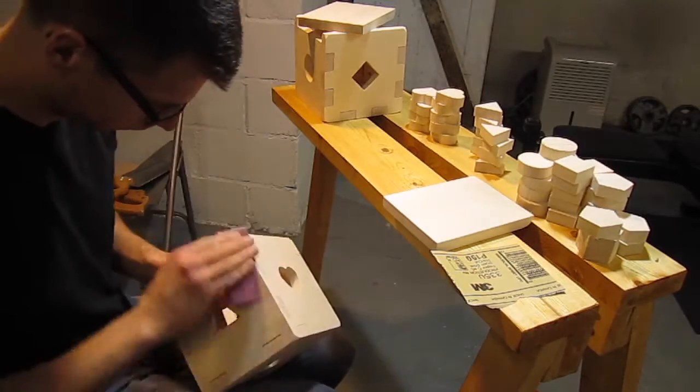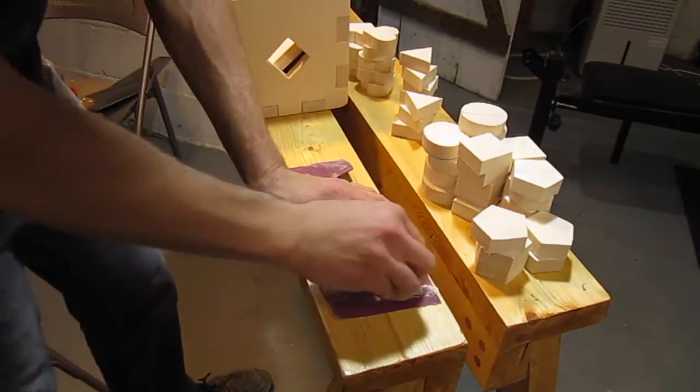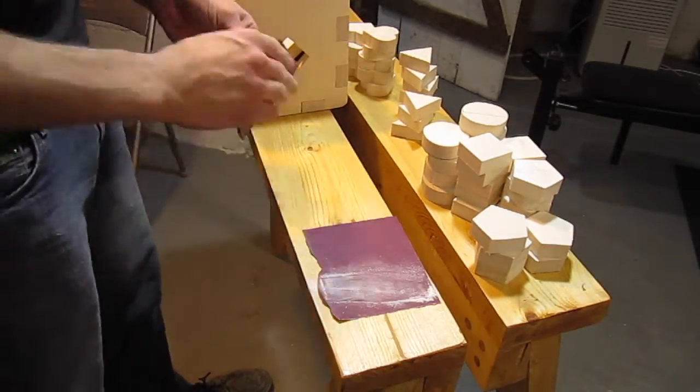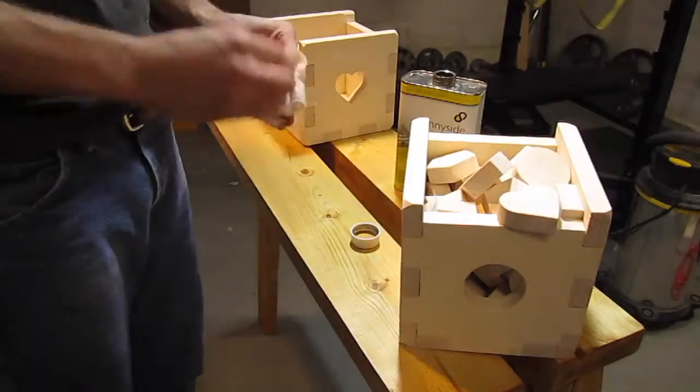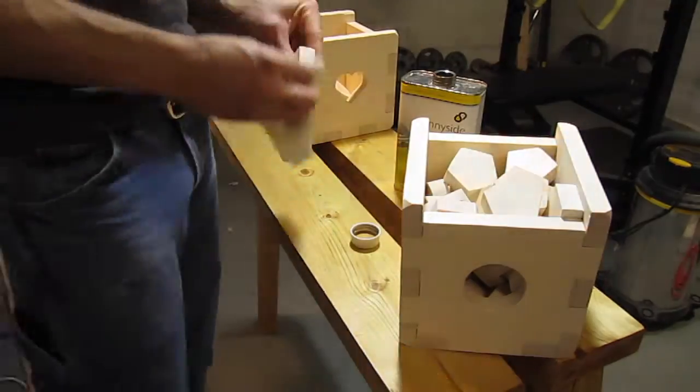Next, I sanded the boxes and all the pieces. This was a bit time consuming and tedious to do by hand. A disc or belt sander would have made the process much quicker. Then I wiped everything down with denatured alcohol to remove most of the dust and debris.